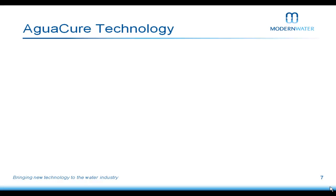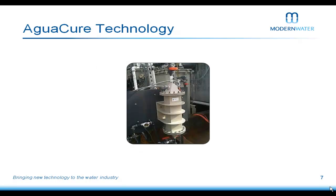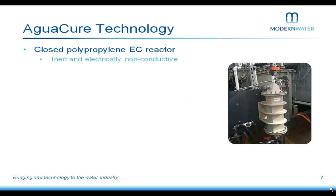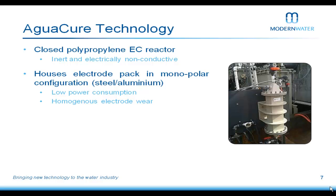Now for our Agwacure technology. There's a photo of our system currently on site in Texas treating marine effluent. It's a closed polypropylene EC reactor cell — the grey box is polypropylene, chosen because it's inert and unreactive; the only reactions we want are on the metal electrodes inside. The electrodes are housed in a monopolar configuration — either steel for iron dosing or aluminium for aluminium hydroxide. This configuration gives us very low power consumption and upwards of around 95% homogeneous electrode wear, meaning we can dissolve nearly 95% of the electrodes into solution.